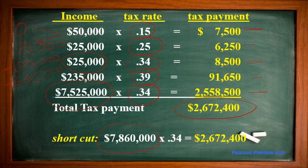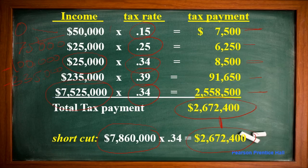Both methods give the same total tax of $2,672,400. This is how we calculate the taxes to pay against our taxable income. If you don't understand, please let me know in the comment box and I will bring a new example to explain in a different way.